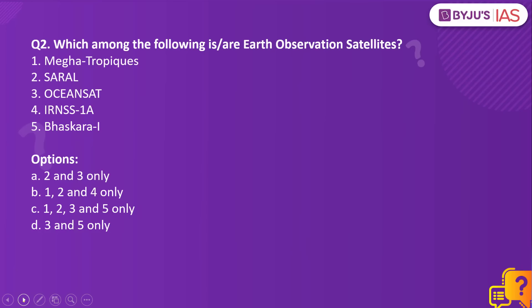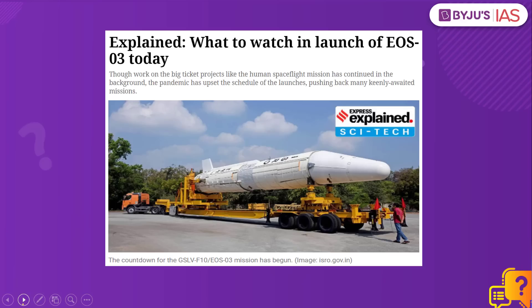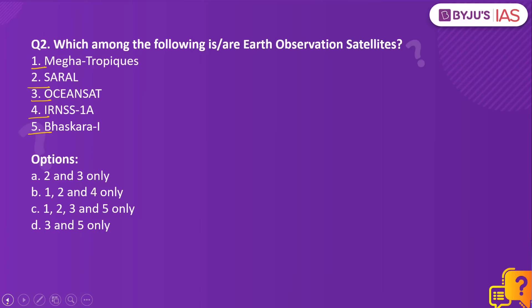Moving on to question number two: which among the following is or are Earth Observation Satellites? — Megatropics, Saral, OceanSat, IRNSS-1A, and Bhaskara-1. This question is based on an article in the Indian Express about the Earth Observation Satellite EOS-3, which was scheduled to be placed into geostationary orbit today.